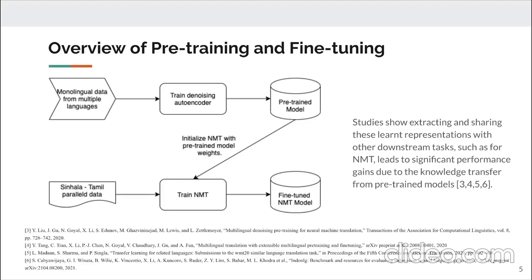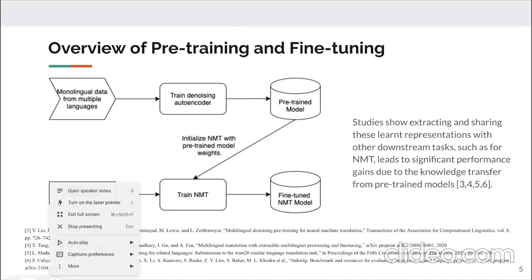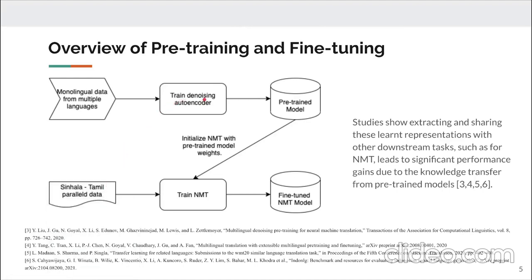For the overview of pre-training and fine-tuning: assuming we have multiple monolingual datasets from different languages, we can train a denoising autoencoder and obtain a pre-trained model. For NMT, when we want to train a single neural machine translation system, we first initialize the NMT with pre-trained model weights for embeddings, decoders, and encoders, rather than using random initialization.